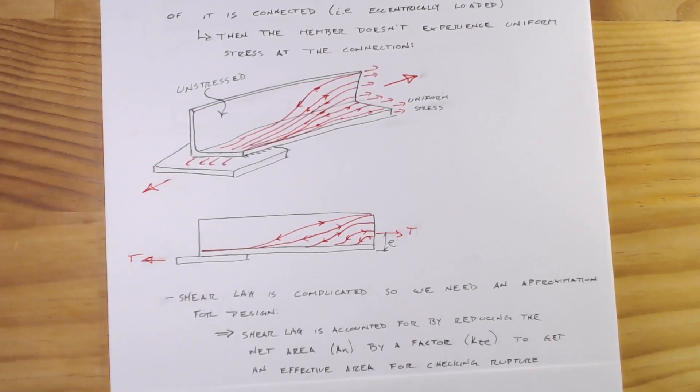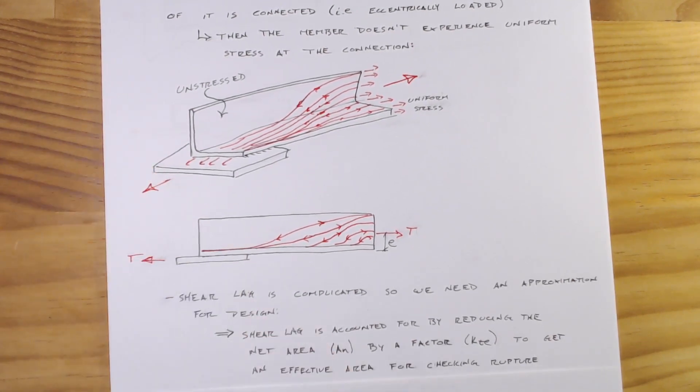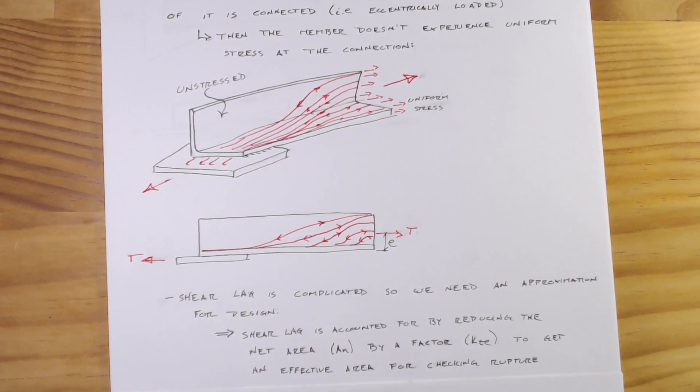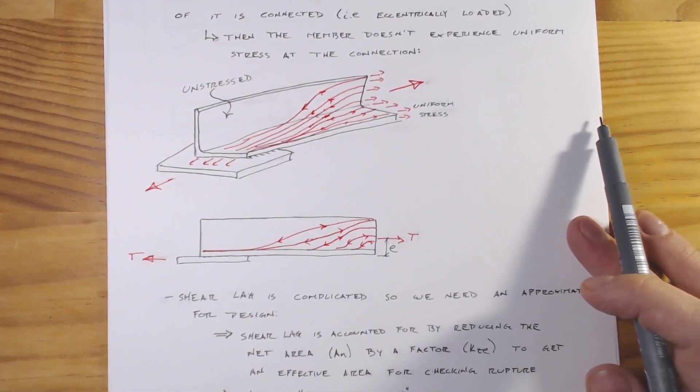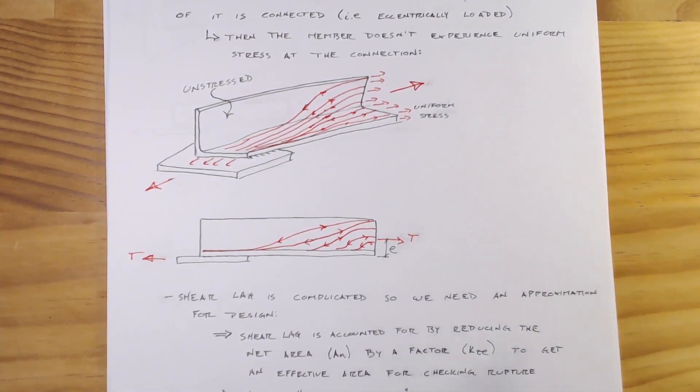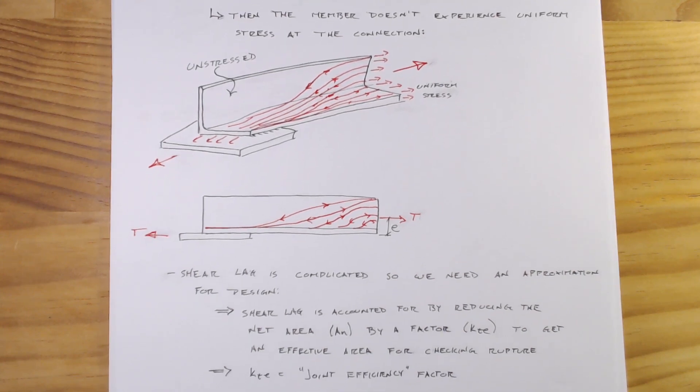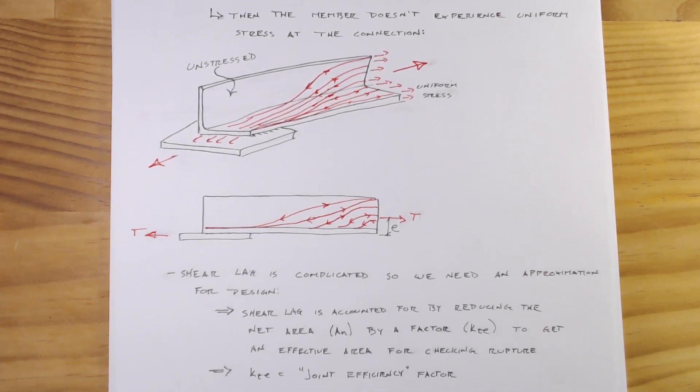We go through the design and effectively say that this portion really isn't getting used, so what we're going to do is just pretend that it's not there and we're going to reduce down our net area by some factor kte. This kte is called the joint deficiency factor. Part of that is just due to the amount of area which is stressed or unstressed and part of it is also to do with this eccentricity.